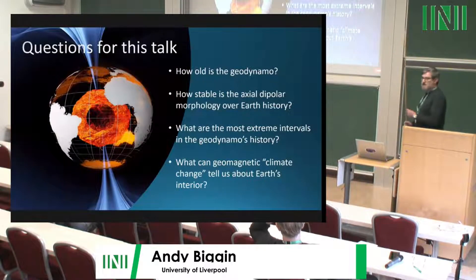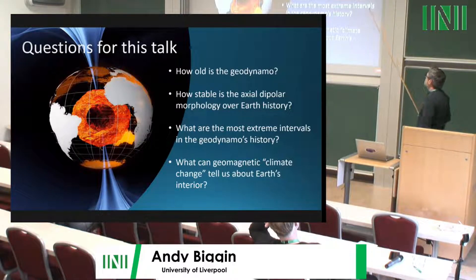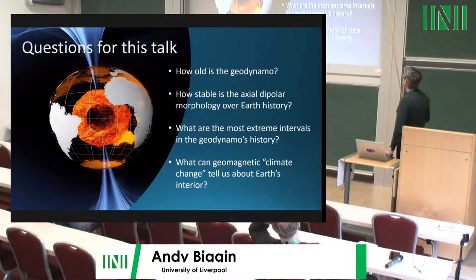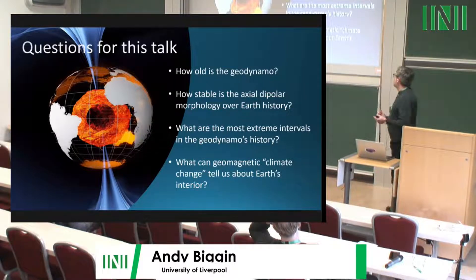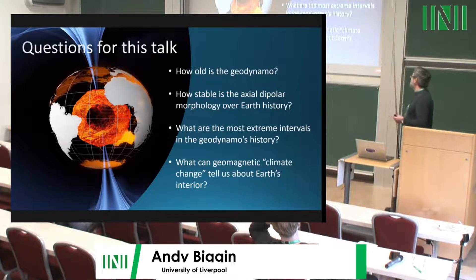With paleomagnetism we can address a whole series of questions about long-timescale variations of the geomagnetic field and the geodynamo. The questions I'll tackle are: for how long has Earth had a dynamo? Today's field is clearly dominated by an axial dipole — can we say anything about the paleo-field in deep time? When we depart from that state, what do those departures look like and when did they happen?